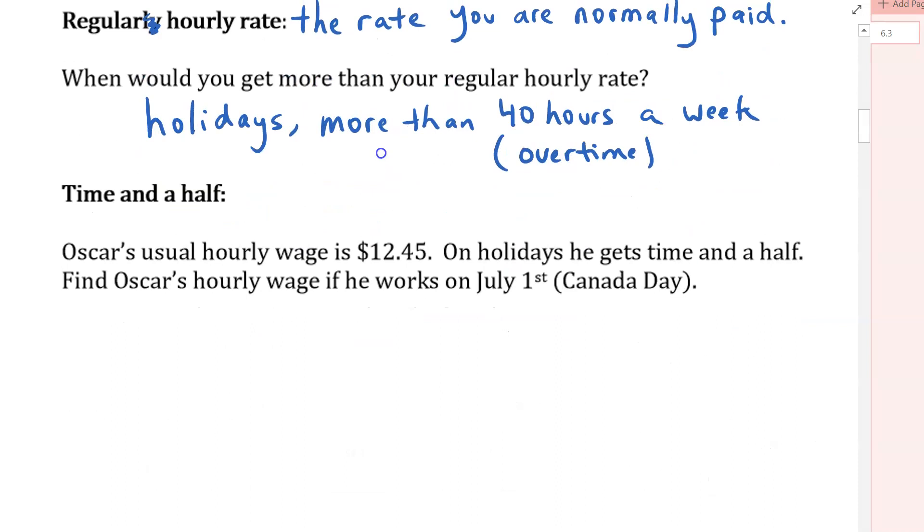So let's do an example here. Oscar's usual hourly wage is $12.45. On holidays, he gets time and a half. Find Oscar's hourly wage if he works on July 1st, which is a holiday because it's Canada Day. So the first thing we're going to do is we're going to figure out what the hourly rate is going to be. So if we have this $12.45 for every hour, and we're going to multiply that by time and a half, that's 1.5. So we're going to multiply that times 1.5.